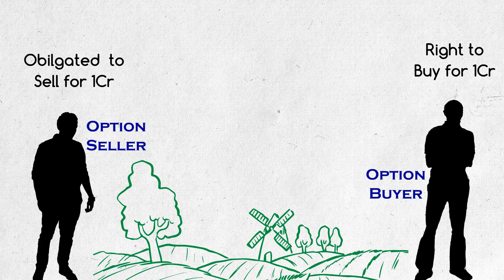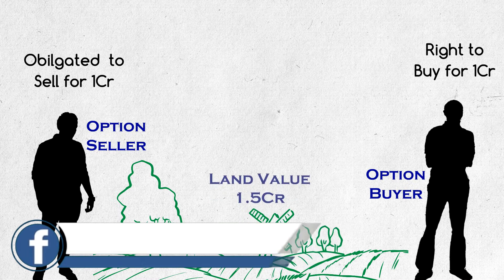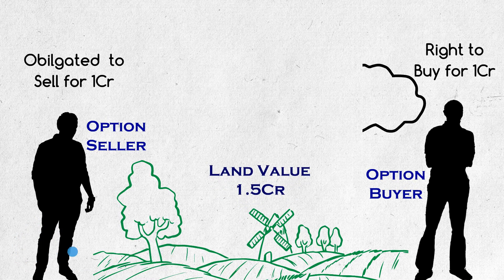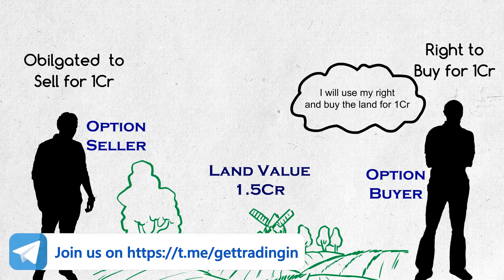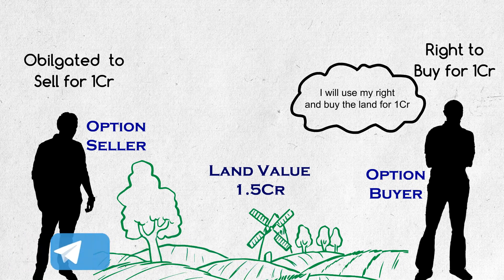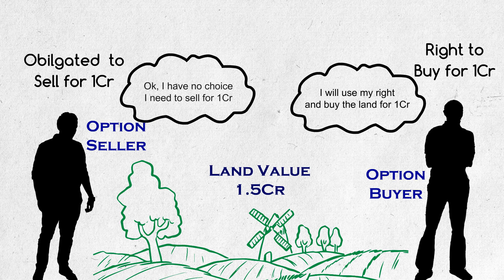Okay, two scenarios can happen on July 1st. Scenario 1 — highway may get sanctioned and land rate may shoot up to 1.5 crores. So Mr. Reddy meets Mr. Arun and buys his land for 1 crore rupees. Mr. Arun must and should sell the land at 1 crore rupees even if the rate is 1.5 crores on the open market. Why? Because he is obligated to.